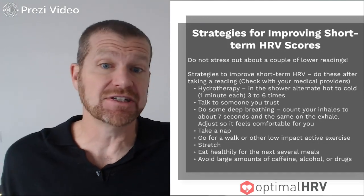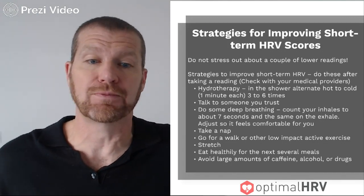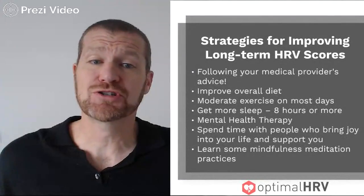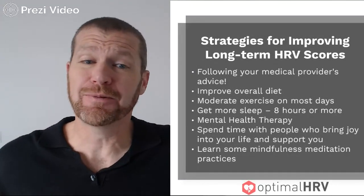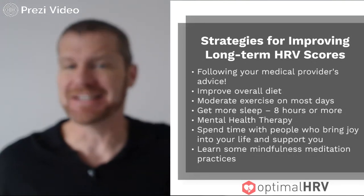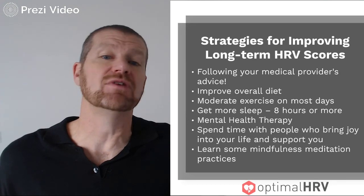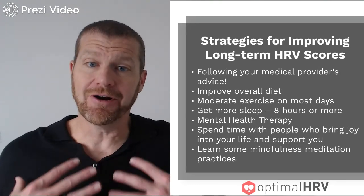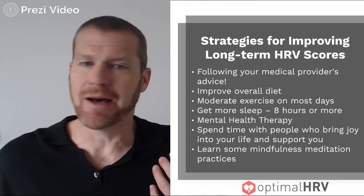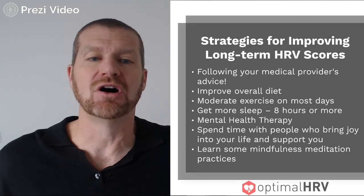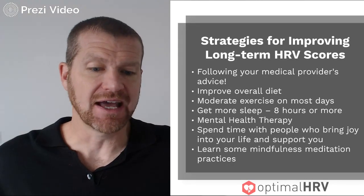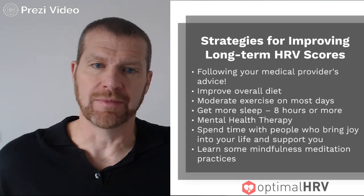These are just some strategies you can use if you don't like your morning score, to improve it and hopefully get that evening score up higher. For long-term strategies: if your medical provider is giving you advice — like quitting smoking, doing more exercise, or getting on a medication — those can be really good for heart rate variability. The healthier your body, the better it will show up in your HRV scores. Improving your overall diet is also beneficial both short-term and long-term.